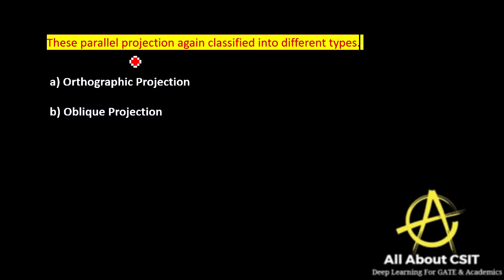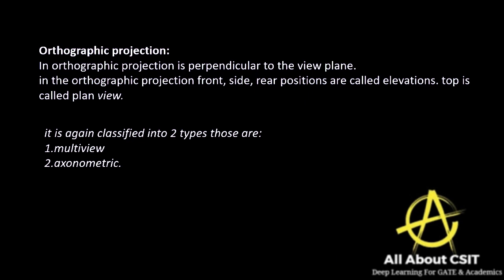Now let's discuss the types of parallel projection: orthographic and oblique. The key difference is that in orthographic projection the projection is perpendicular to the view plane, whereas in oblique the projection is not perpendicular to the view plane. Orthographic projection is a parallel projection perpendicular to the view plane.